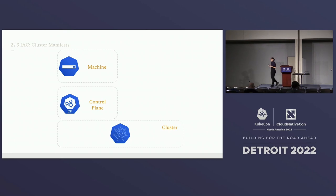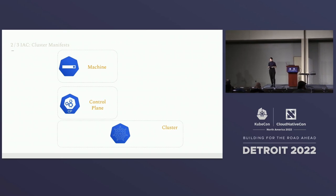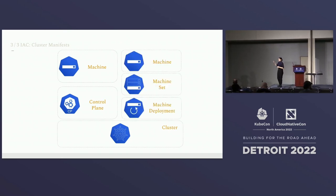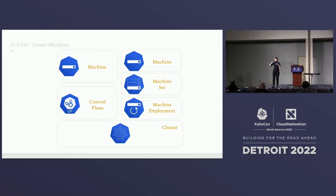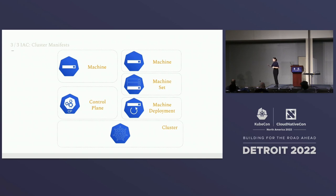If you want to deploy any workloads, you'll require a data plane. In Cluster API this is managed through a machine deployment, which is very similar to a Deployment in Kubernetes — it ensures different rollout strategies between machine set resources. Machine set is very similar to a replica set: it ensures a certain number of machine resources are up and running at all times. A machine here is an instance — you can specify Kubernetes version, instance type, and so forth, but the label for these nodes will be worker node.